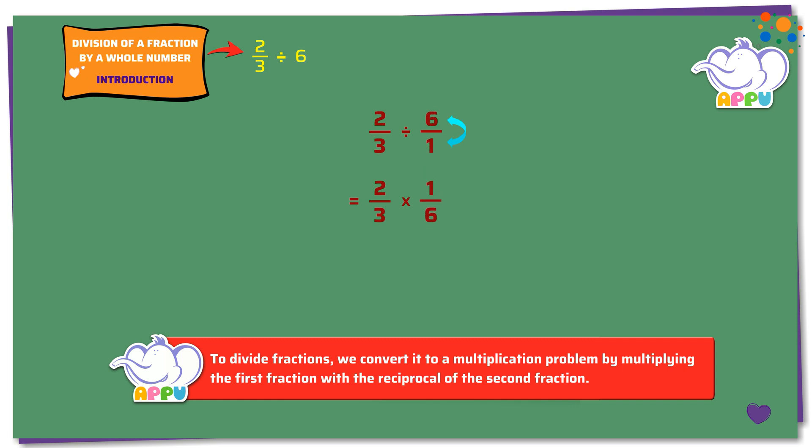We multiply the numerators to get 1 times 1 equals 1. We multiply the denominators to get 3 times 3 equals 9.